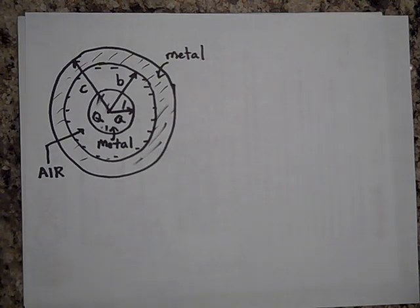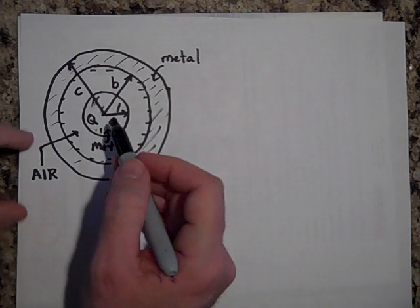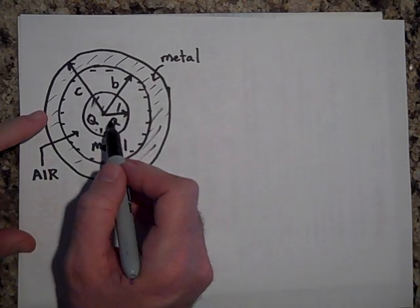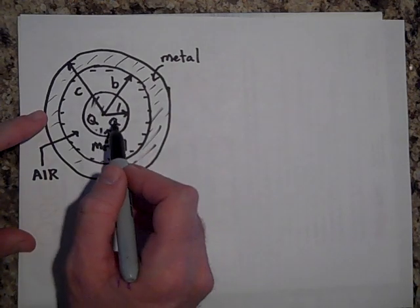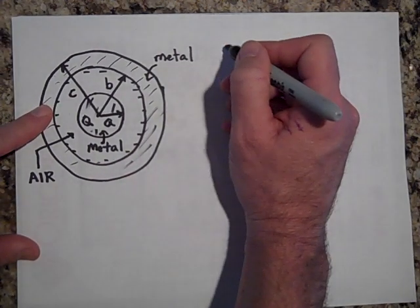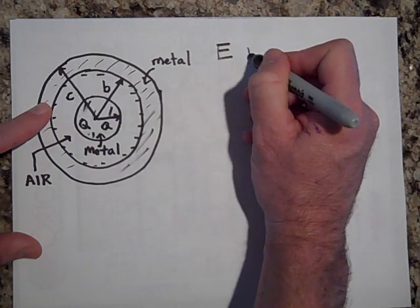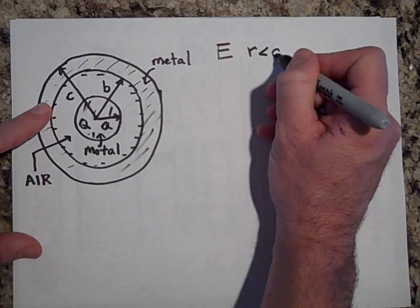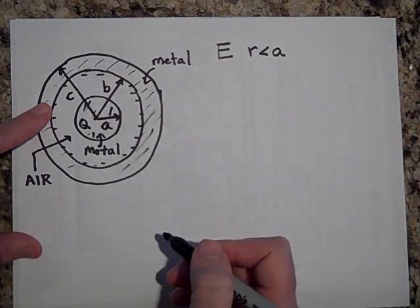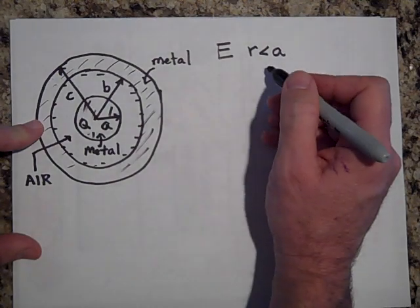Let's find out what the electric field will be at all these locations. Let's find the electric field at a distance that's less than A away. Well, the electric field at R is less than A is going to be, since you're in the metal, that has to equal zero.